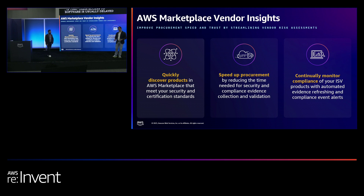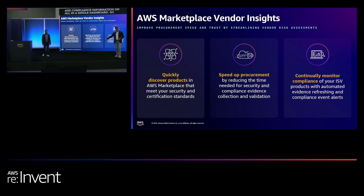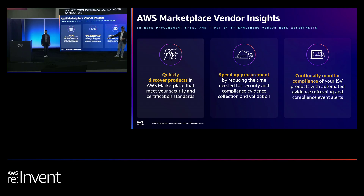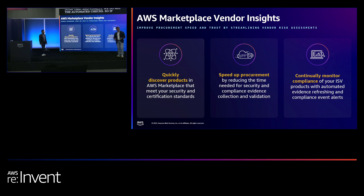To solve that, we built AWS Marketplace Vendor Insights. This feature offers consolidated security and compliance information all in a single dashboard. First, it allows you to quickly discover products in AWS Marketplace based on specific security profiles and security certifications that an application has. Second, we collect all the information on your behalf — we can save up to eight to ten weeks of your procurement cycle because you don't need to engage with the vendors; Vendor Insights has already done that. And finally, we do automated checks, so if something changes in the security posture of the application, Vendor Insights will send you automated updates so you can take action immediately.